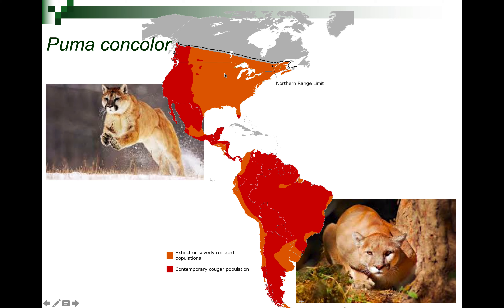Here's another example: the cougar, Puma concolor — also called mountain lion or puma — lives from Canada all the way down to the tip of South America, or at least they did. Right now many populations are extinct or severely reduced, but they do live throughout these regions.